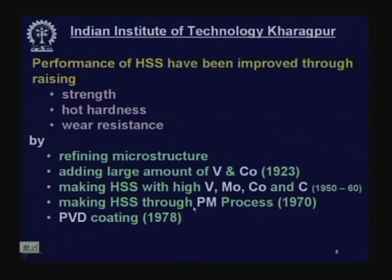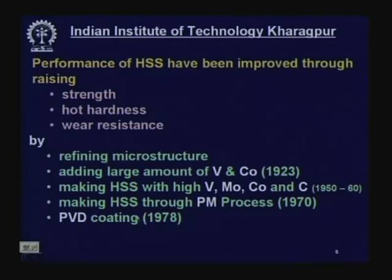High speed steel produced by powder metallurgical process since 1970 enables a very fine microstructure and hence improved properties. In 1978–80, high speed steel tools were coated by physical vapor deposition (PVD) with coating materials like titanium nitride, titanium carbon nitride, and aluminium titanium nitride. Research is still ongoing to improve the performance and quality of high speed steel.